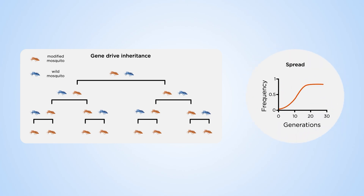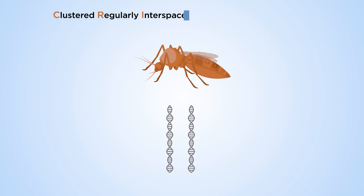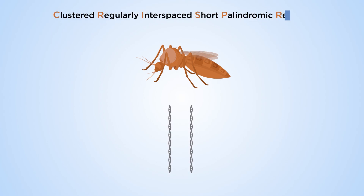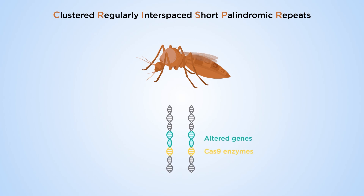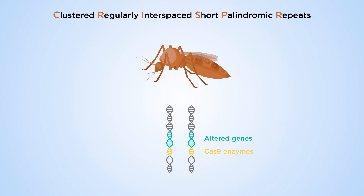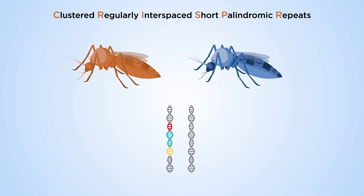Gene drives in mosquitoes are produced by introducing the Cas9 enzyme, which cuts DNA, and guide RNA, which tells the Cas9 enzyme precisely where to place the alteration.